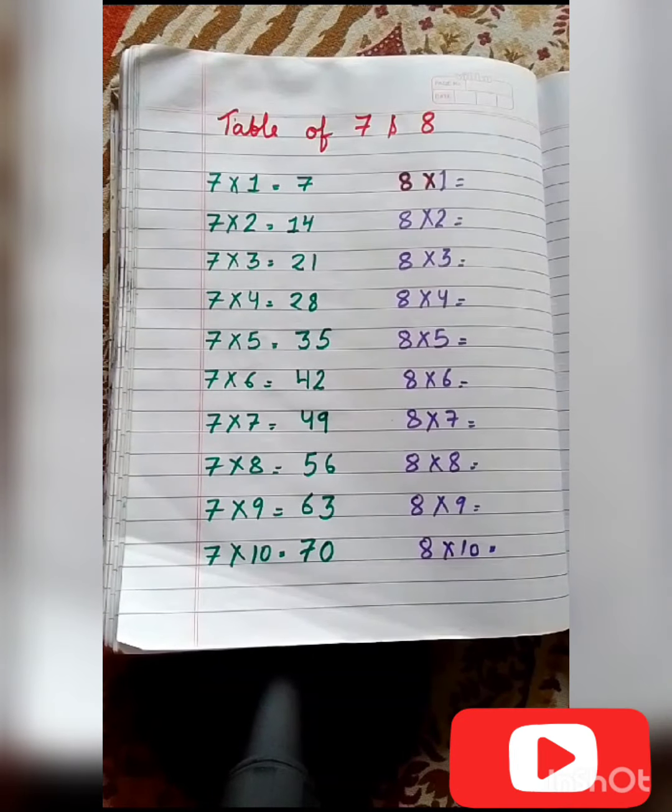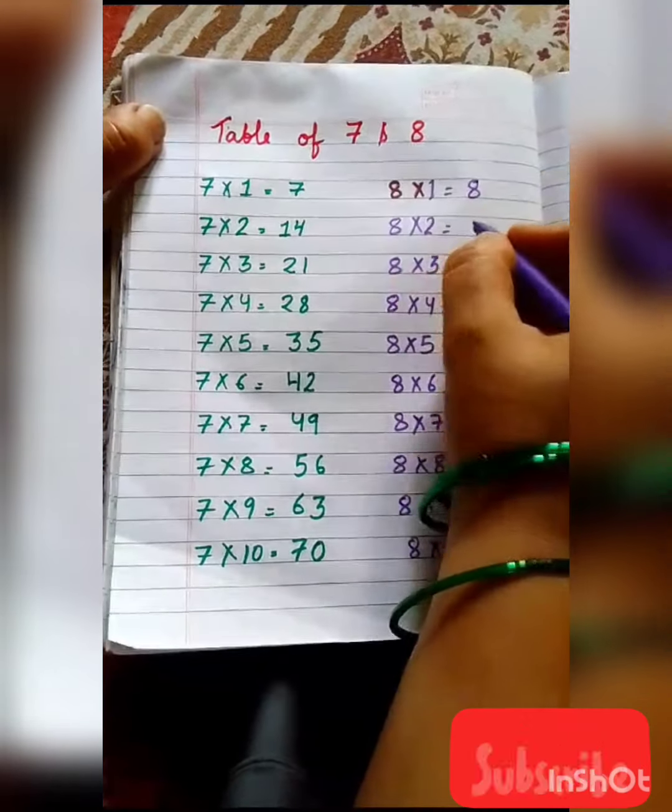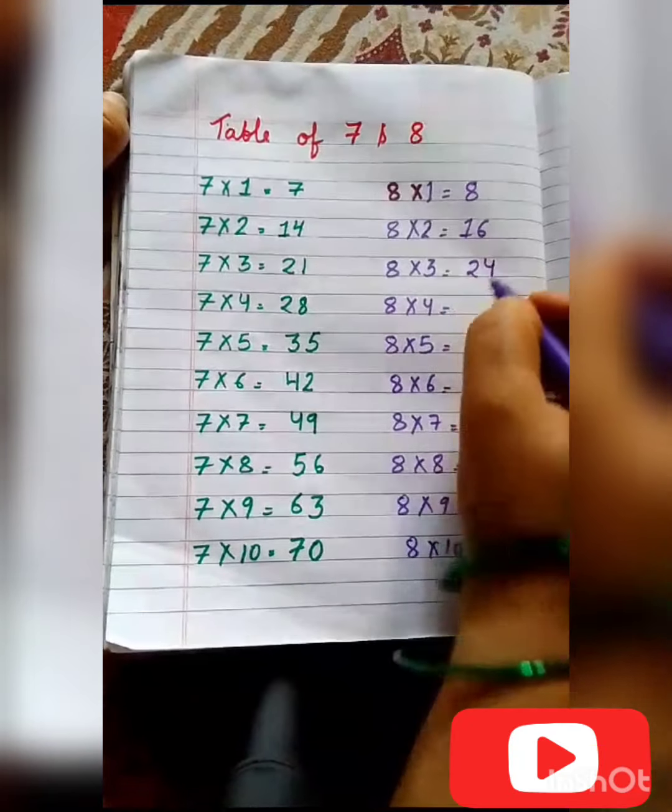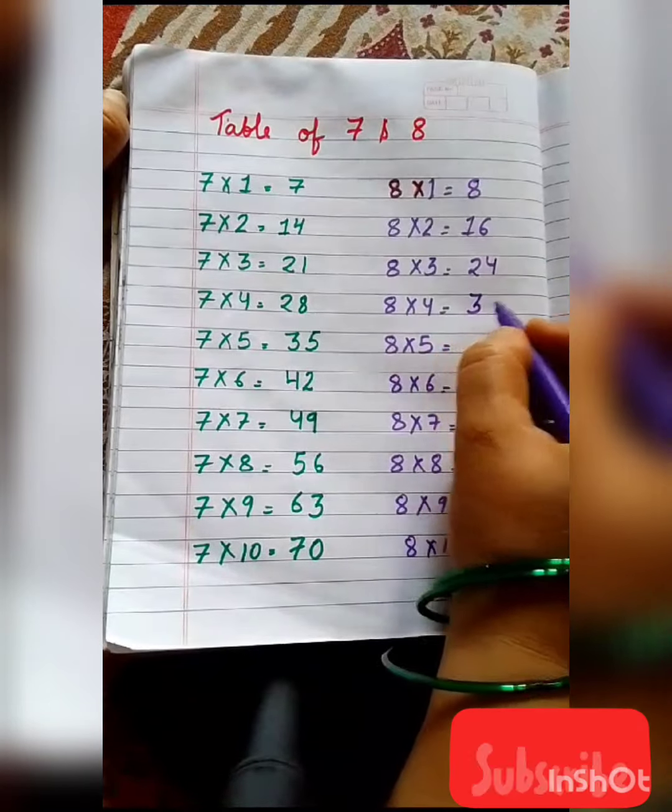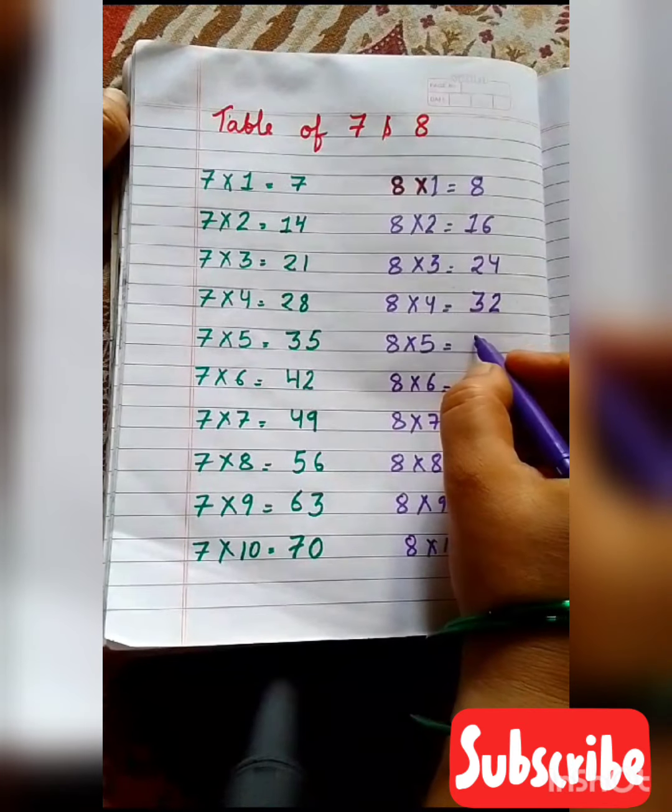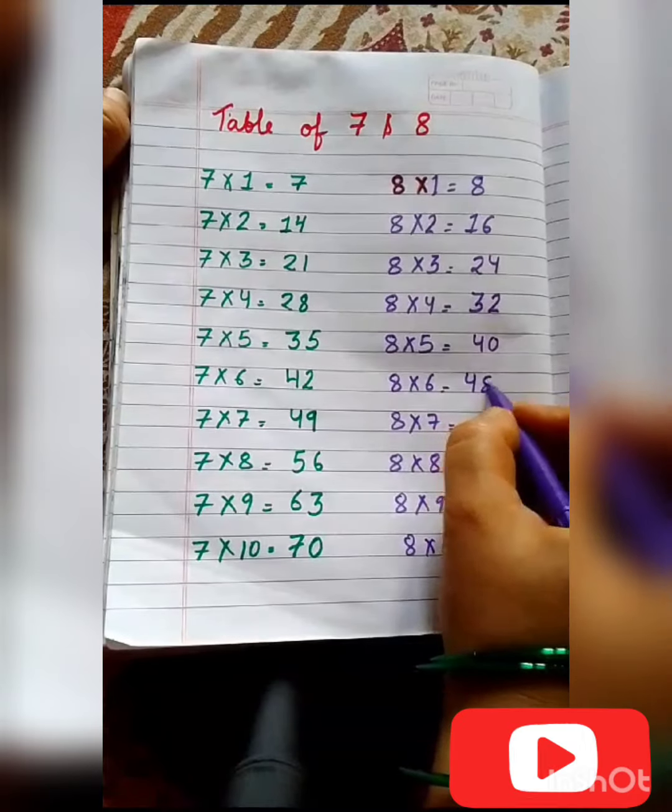Now we will write the table of 8. 8 ones are 8, 8 twos are 16, 8 threes are 24, 8 fours are 32, 8 fives are 40, 8 sixes are 48.